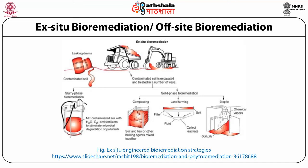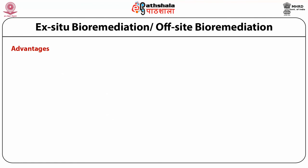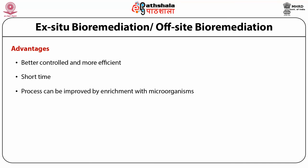In solid phase bioremediation, three processes are carried out: composting, land farming, and biopile. In composting, soil and hay or other bulking agents are mixed together to convert them into manure or natural fertilizer. In land farming, soil is transferred to a particular land where filters and fluids collect the pollutant leachate. In biopiles, a chamber of soil pile is sprinkled with chemical vapors so that pollutants in the soil react and are removed. The advantage of this method is that it is better controlled, more efficient, takes shorter time than in-situ, and can be improved by enrichment with microorganisms.